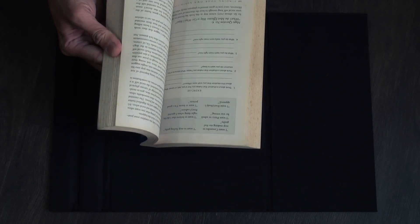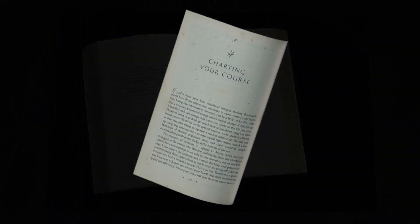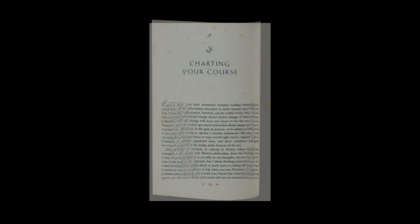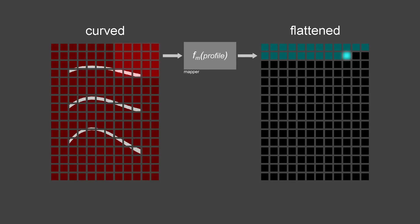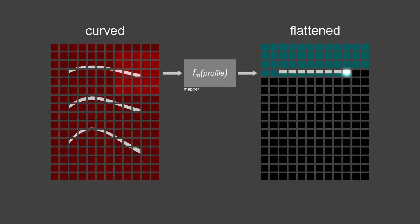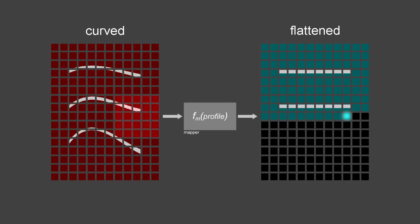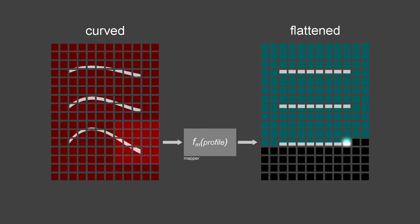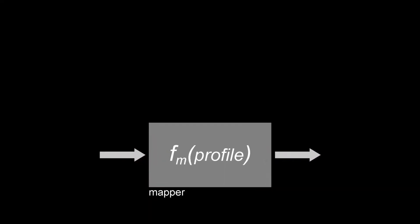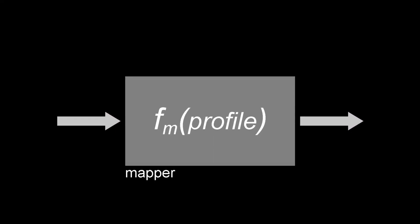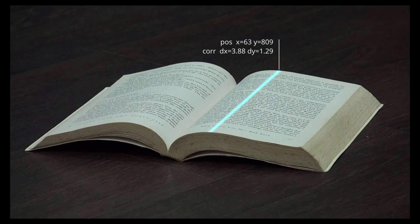With advancements in computing, it became possible to leave book pages in their naturally warped condition and get flat-looking scans. This could be achieved by digitally remapping each image pixel using software algorithms. However, the real challenge was not the mapping process. What no one had done before was finding the perfect page profile, which comprises the exact amount of correction to apply at every page location.